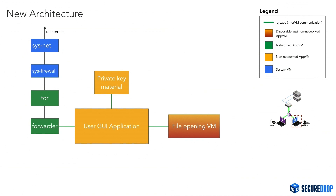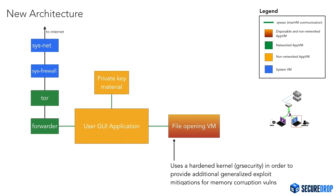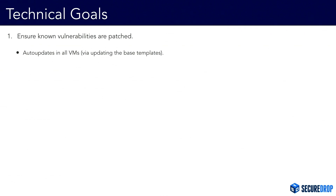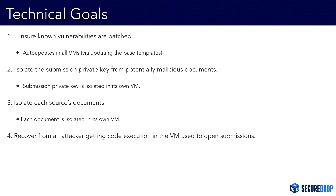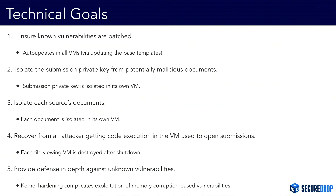For these VMs we want the strongest protections — we want to prevent an attacker from getting code execution if we can. We have additional mitigations like the use of a hardened kernel to make memory corruption vulnerabilities harder to exploit, as defense in depth against unknown vulnerabilities that might exist in applications used to open documents like Evince or LibreOffice. Checking against our technical goals: known vulnerabilities are patched because all VMs are based on templates we can update. The submission private key is isolated in its own VM. Each source's documents are isolated by running the file-opening application in its own VM. An attacker getting code execution in the submission VM is handled by destroying the entire virtual machine. And defense in depth is provided by kernel hardening.